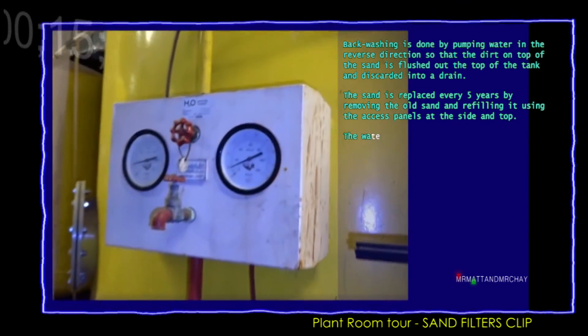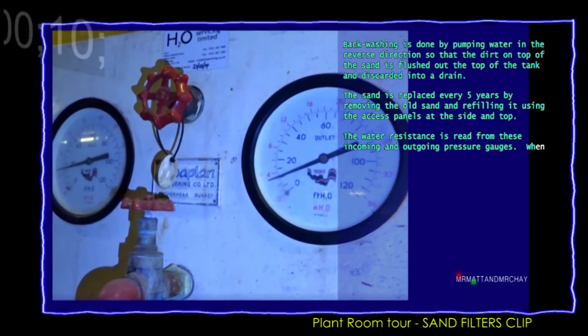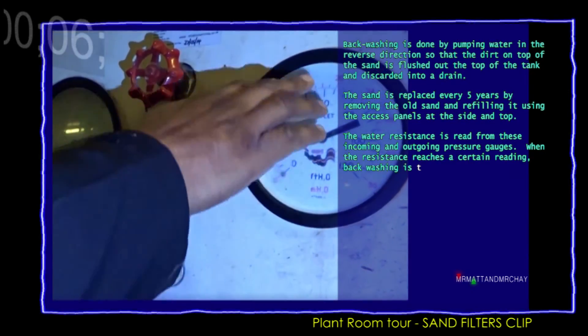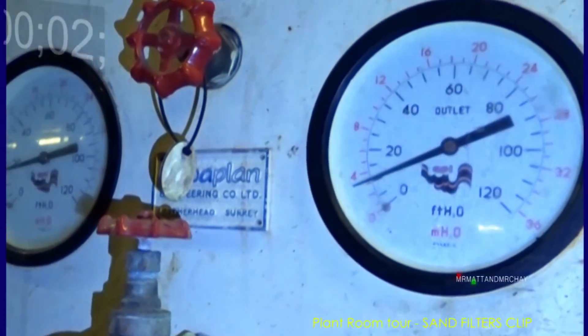The water resistance can be read from these gauges. The left one shows the incoming water pressure, the right gauge shows the outgoing pressure. The higher the readings, the higher the resistance, which indicates when backwashing is required.